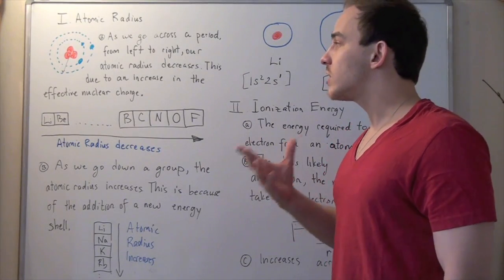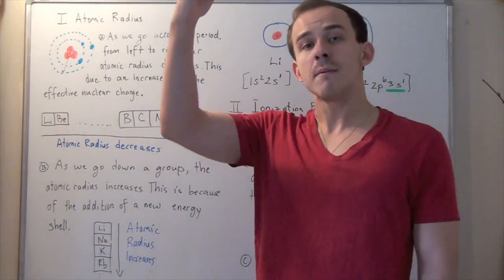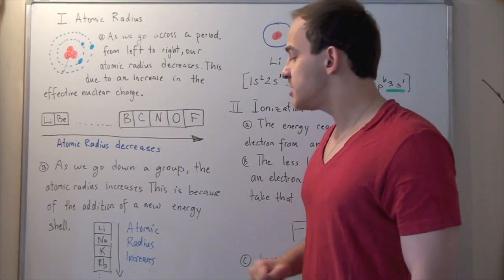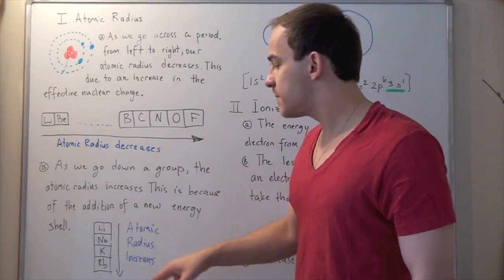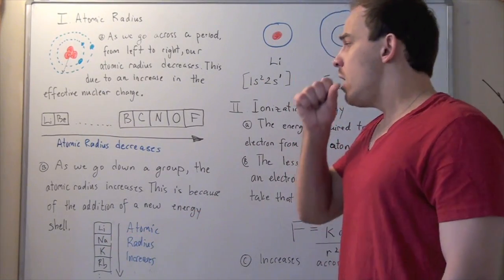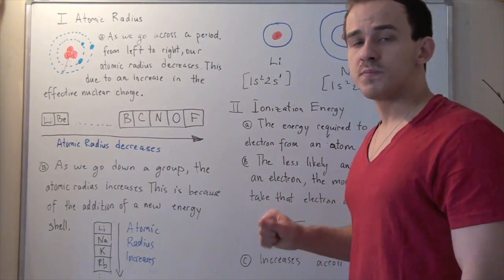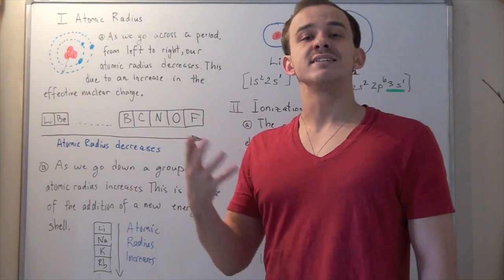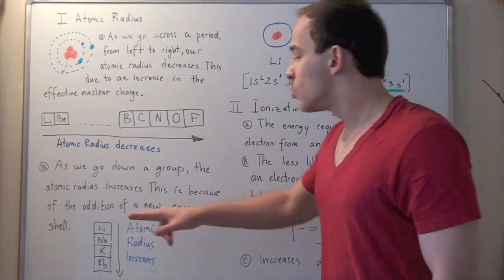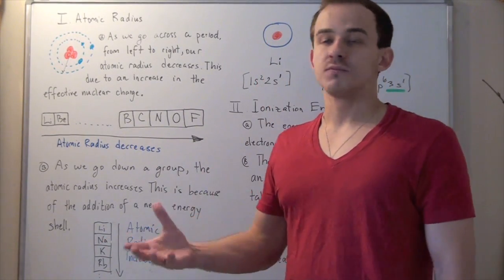Now let's talk about a group. What happens as we go from the top of the group to the bottom of the group? As we go down the group, our atomic radius tends to increase, and this is because with each atom we add a new energy shell.